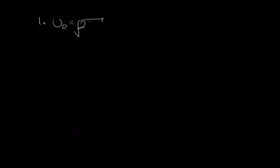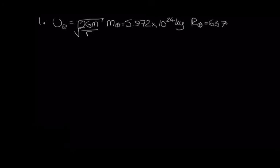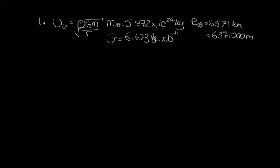We'll start by talking through Question 1. Question 1 is all about the escape velocity from objects. We're told that the escape velocity is equal to the square root of 2GM divided by r. The mass of the Earth is 5.972×10²⁴ kg, the radius of the Earth is 6,371 km or 6,371,000 meters. It's always best to have things in meters, kilograms, and seconds. The universal gravitational constant is 6.67384×10⁻¹¹ kg⁻¹ s⁻² m³.